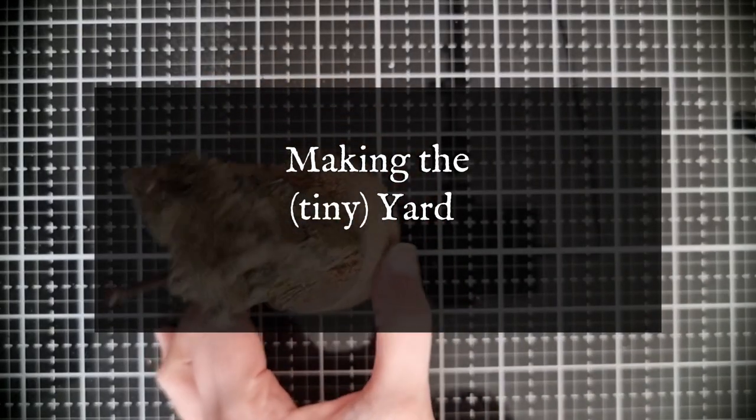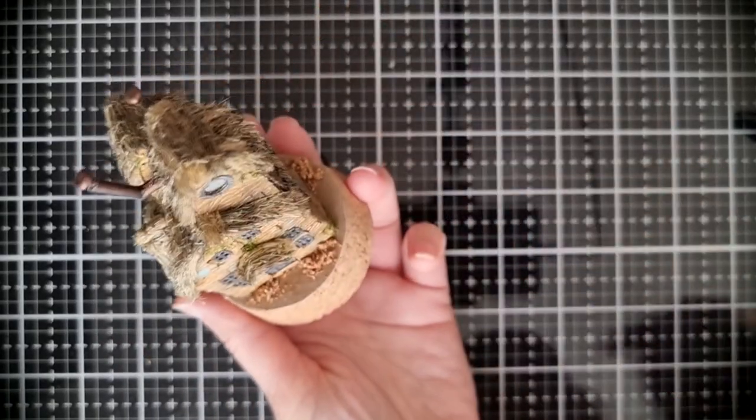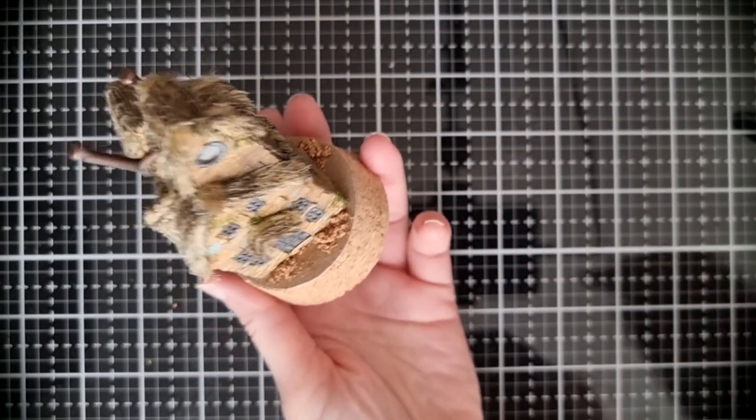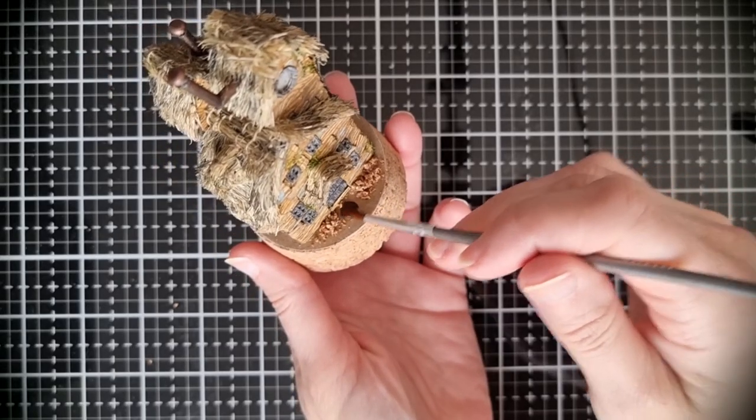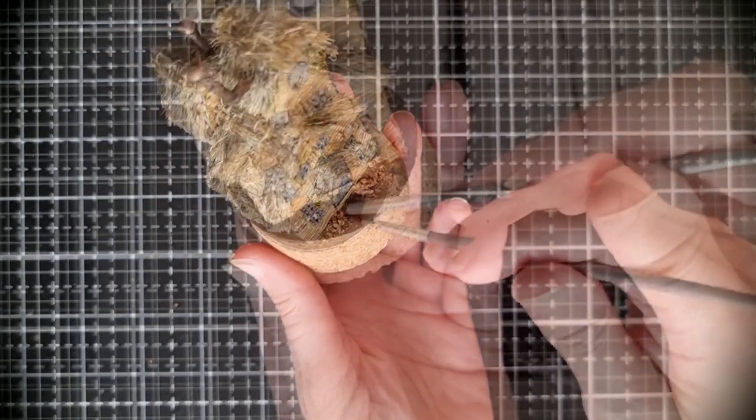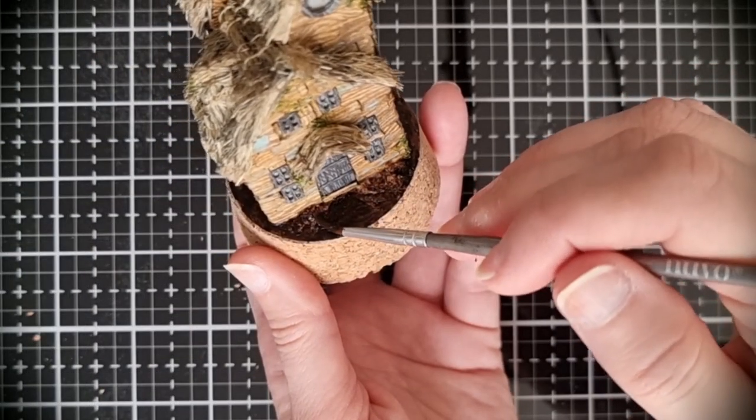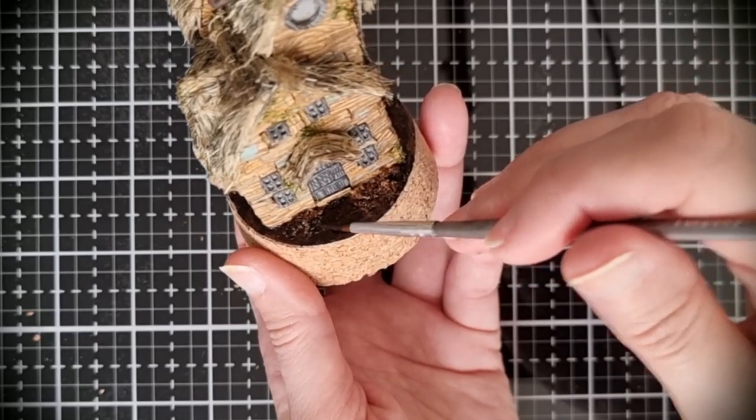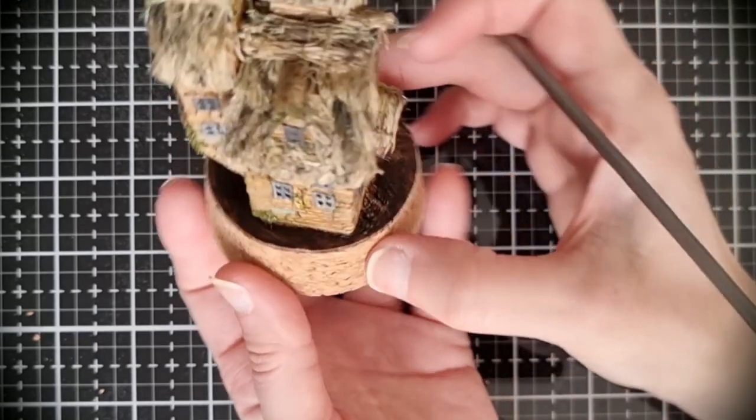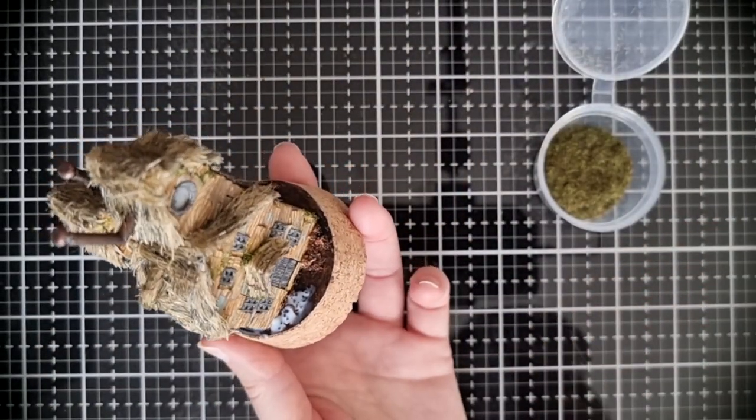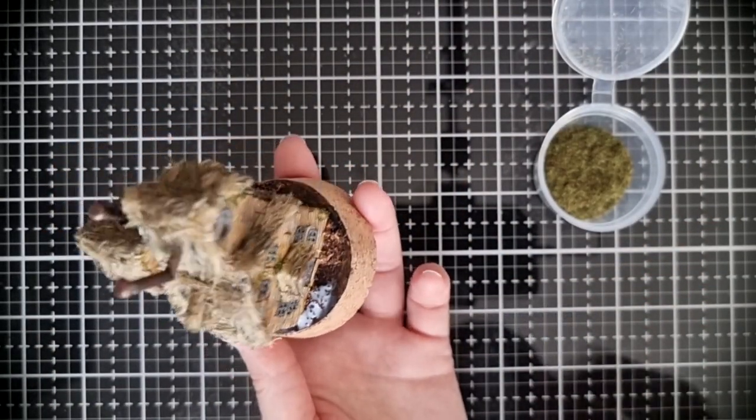I used some of the cork I cut out of the base to create some rocks and variation in the ground height and then painted all the base in dark brown. Then I used liquid glue to add bunches of grass.